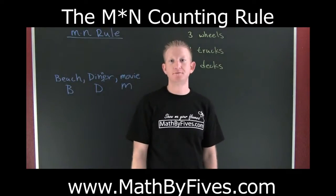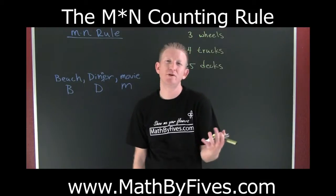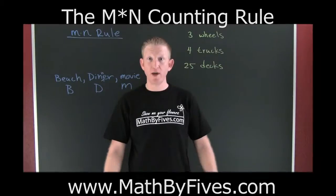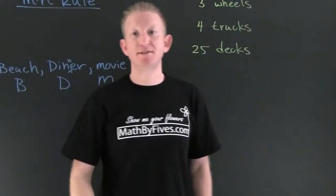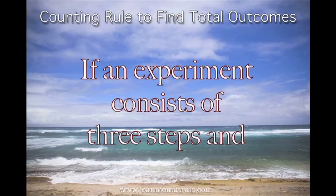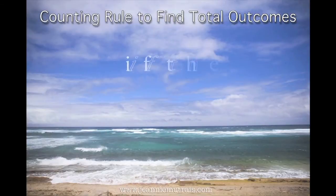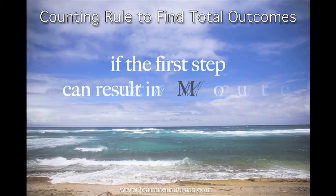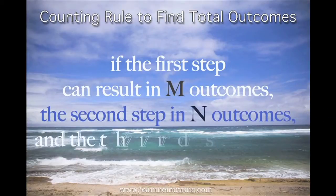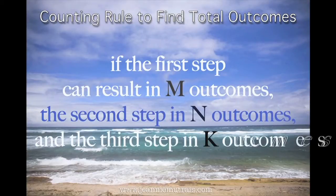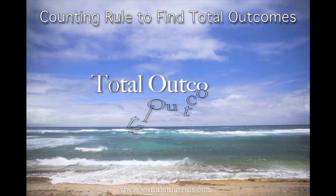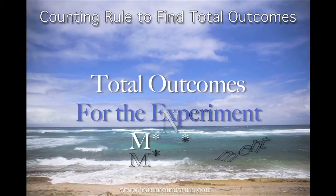I want to count big things. I want to count how many different ways something can happen if it happens in stages. So I want to talk about the MN rule, but first we need a definition. If an experiment consists of three steps, and if the first step can result in M outcomes, and the second step in N outcomes, and the third step in K outcomes, then the total outcomes for the experiment is M times N times K.